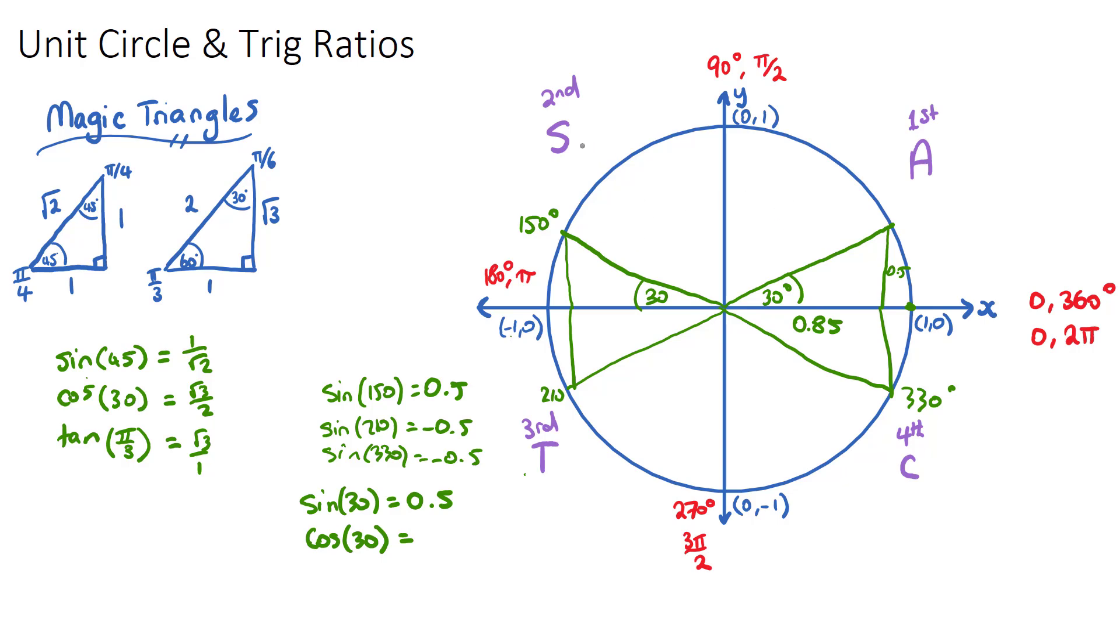In the second quadrant here, only sine, that's why it's the S quadrant, is positive, because any angle in the second quadrant will have a positive height, but it has a negative width. It's going left of the y-axis. So, only sine is positive. In the third quadrant, only tan is positive, because both sine and cos, the height and the width, will be negative. And tan is actually a negative over a negative, which will turn it positive.